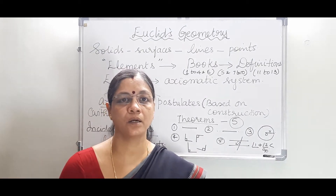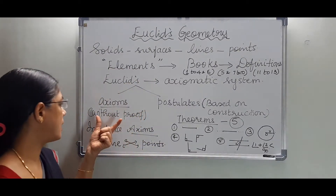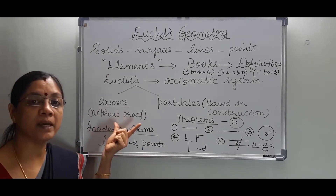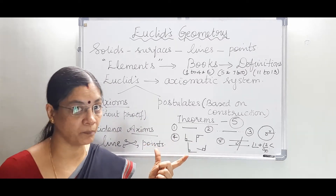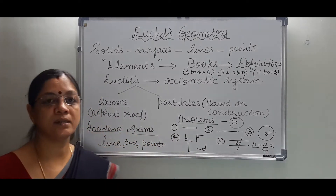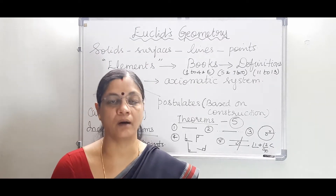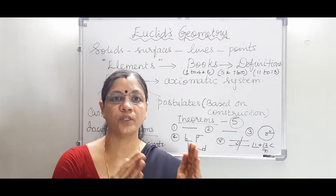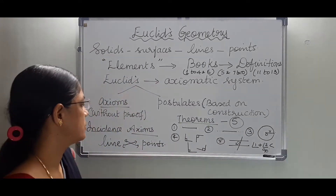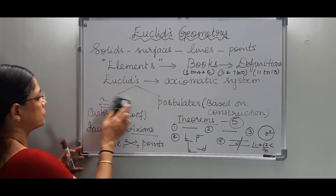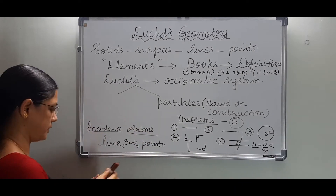These are geometrical ideas which we can see throughout mathematics. Axioms are basic facts and they don't need any proof. Some of the axioms Euclid gave are: things which are equal to the same thing are equal to one another.